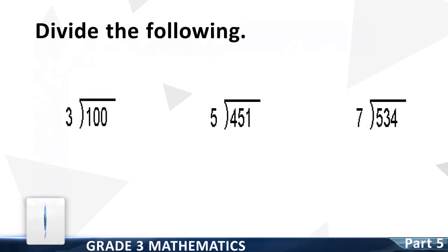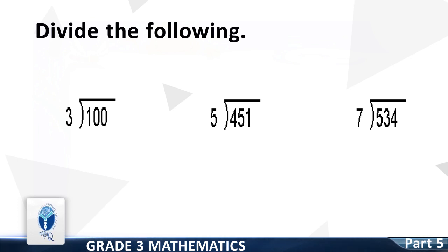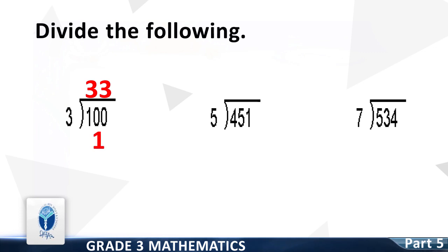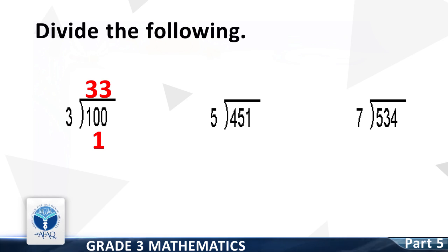Let's start. 100 divided by 3. Good, the correct answer is: quotient 33, remainder 1.